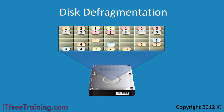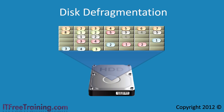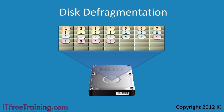To improve system performance, Windows includes a tool called disk defragmenter. Disk defragmenter will take all the files on your hard disk and rearrange them so that they are all in one place. This means that when you read a file on the hard disk, the hard disk only does one seek to access the file.